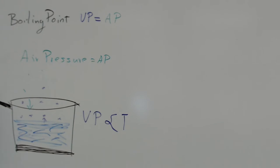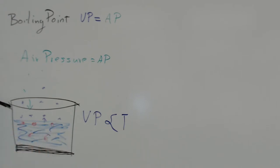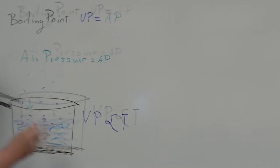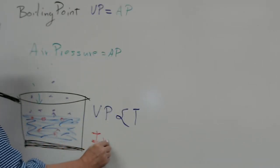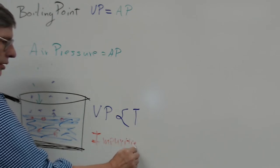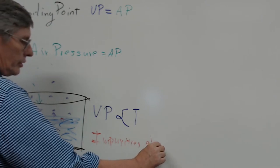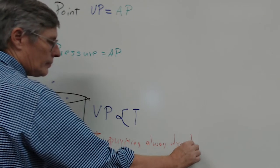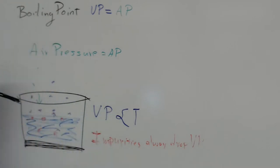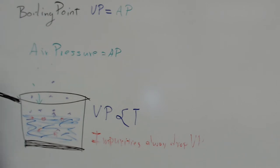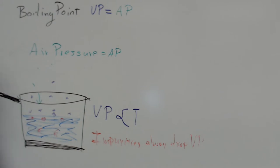Now, what happens when you add impurities? Whenever impurities are added, they always — with no exception — drop the vapor pressure of a liquid. In other words, some of the vapor pressure is no longer pushing up, and when that happens the liquid cannot boil at the same temperature it did before.